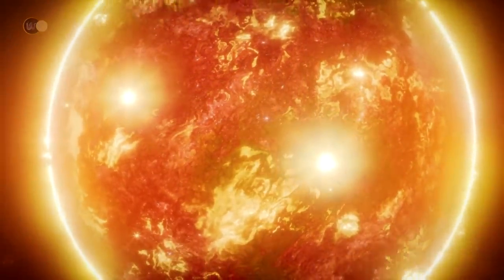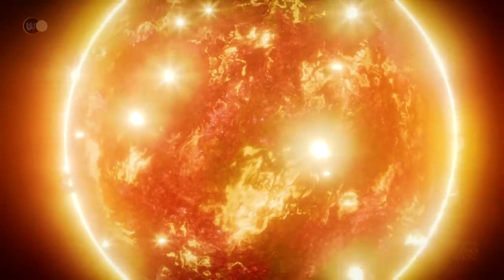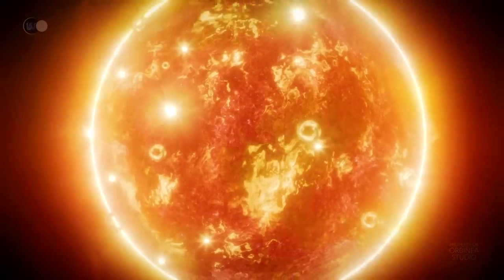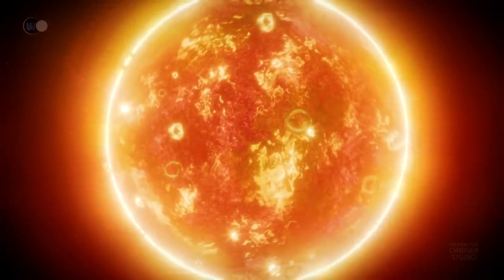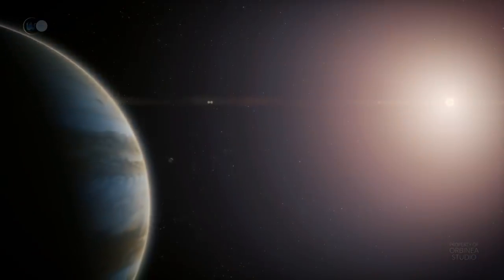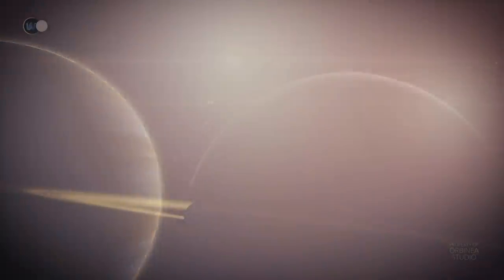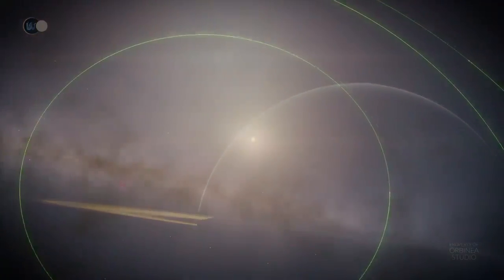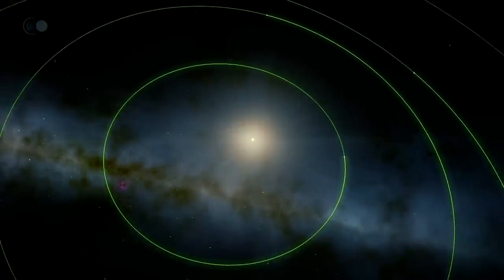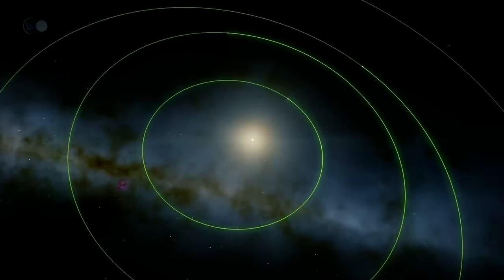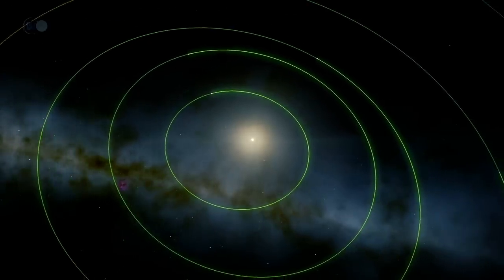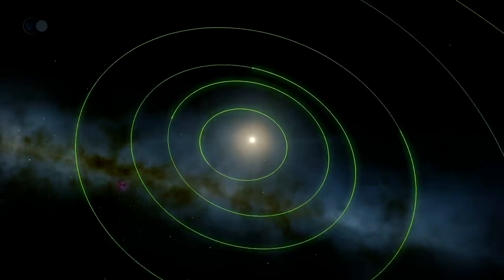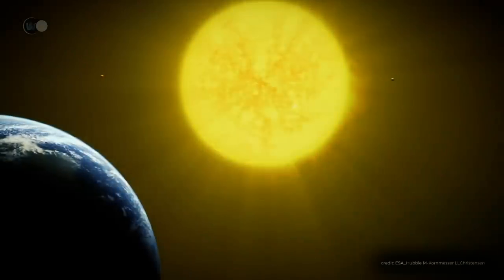The star will then be colder than before, but its luminosity, as we've already seen, will be much greater. The habitable zone of our solar system will then be pushed outwards to encompass Jupiter and Saturn. The orbits of the inner planets will be powerfully disrupted, leading them straight towards the destructive star. As the Sun's gravity becomes weaker and weaker, the orbits of the outer planets will naturally widen.